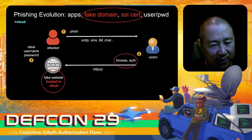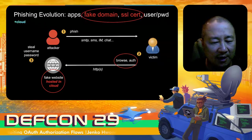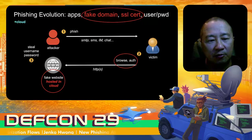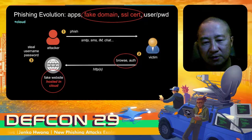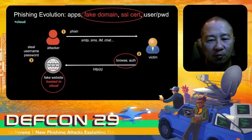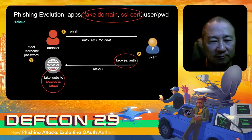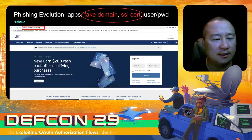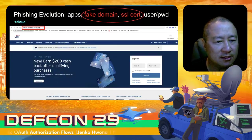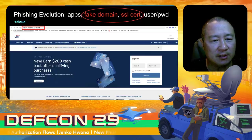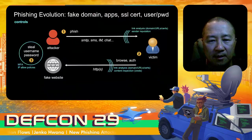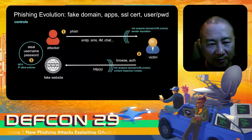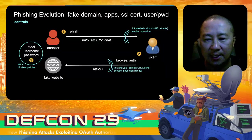With cloud infrastructure providers, attackers suddenly had an easier way to host their actual fake website. On top of that, the domains and SSL certs now reflected those same popular cloud providers, so the victims as well as the security controls had more of a challenge in detecting fake domains, phishing certs, etc. For example, attackers might create something like Citibank's website hosted in Azure.